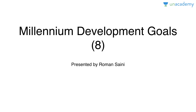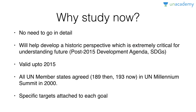Today we're going to deal with Millennium Development Goals. This number 8 signifies the number of goals. This is presented by Roman Saini. Most of you will be wondering why we're studying these goals now — it's already 2016 and these goals are only valid up to 2015. It's a fair argument, but you should have a fair idea because it will help you understand how cooperation happened between various nations in the past as well as how it will happen in the future.